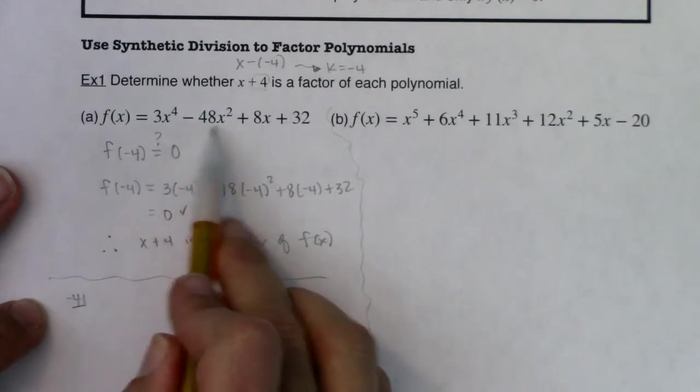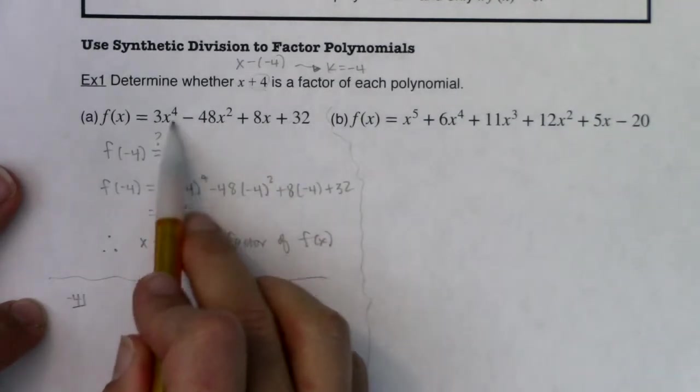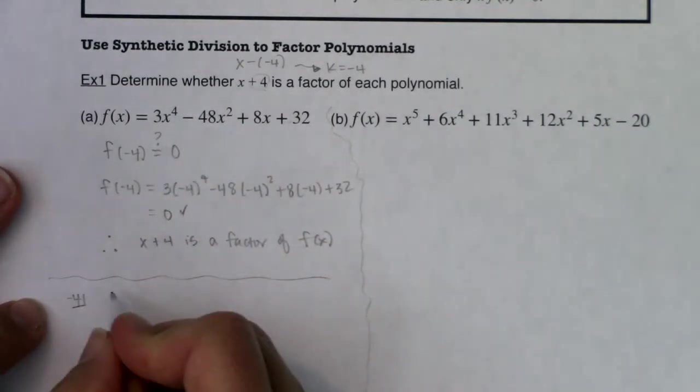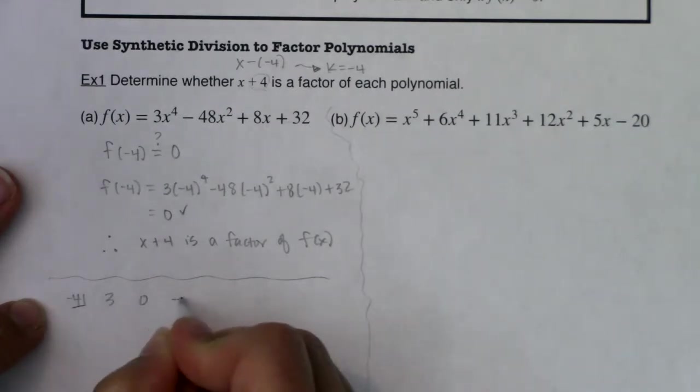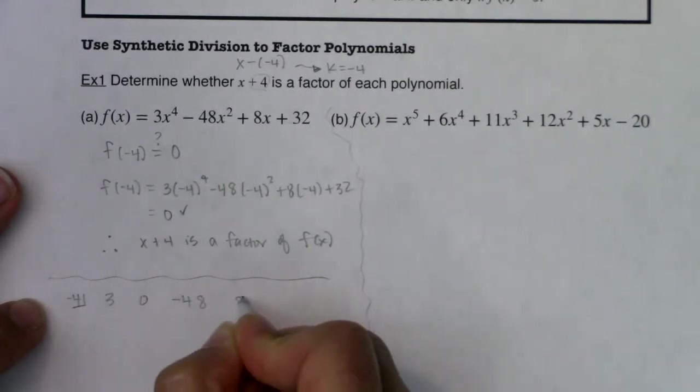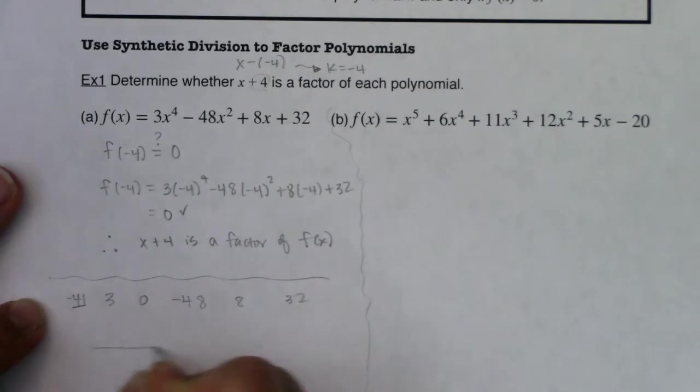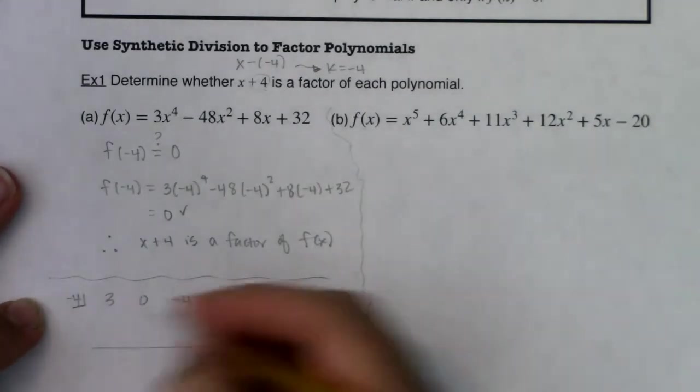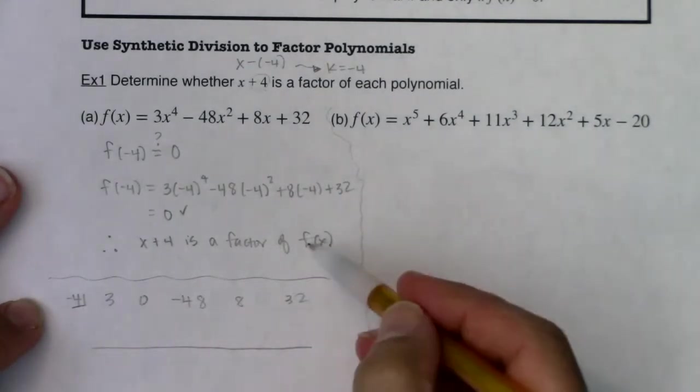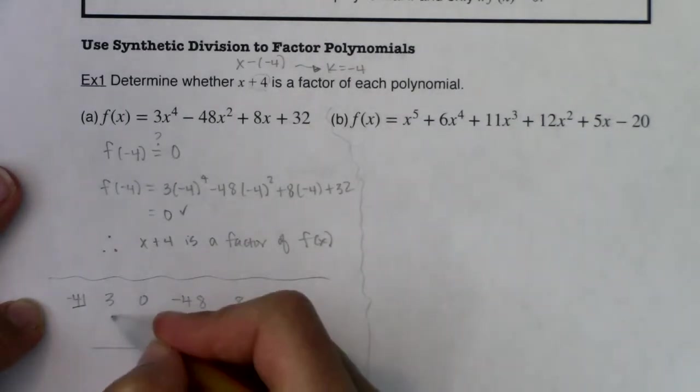Alright, taking a look that this factor is a binomial with a lead coefficient of 1. Now, take a look at your polynomial. Did anyone notice that we skipped over the cubed term? So I'm going to need a placeholder of 0 there. Alright, here we go. Something special is about to happen because x plus 4 is a factor of f of x. So let's try this.